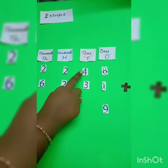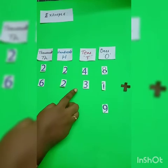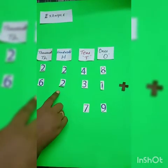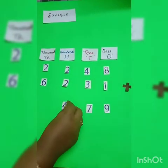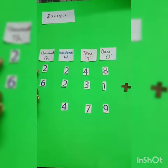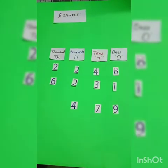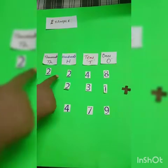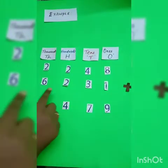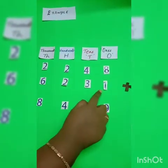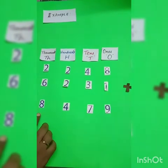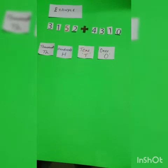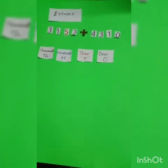Next, 4 plus 3 equals 7. Now, 2 plus 2 equals 4. Finally, 2 plus 6 equals 8. Hence, the sum of 2248 and 6231 is 8479. See another example with 4-digit numbers.